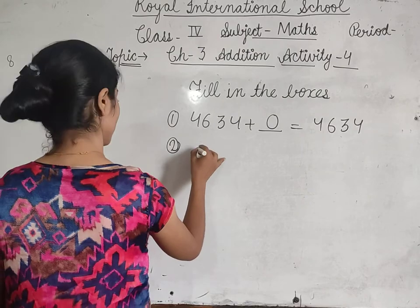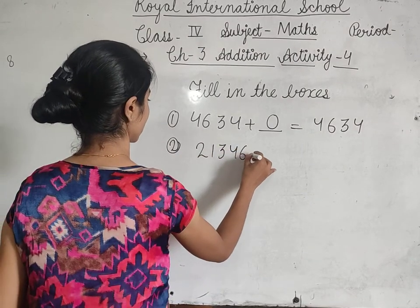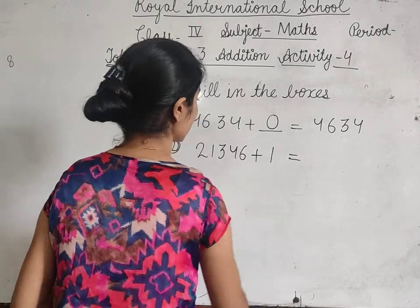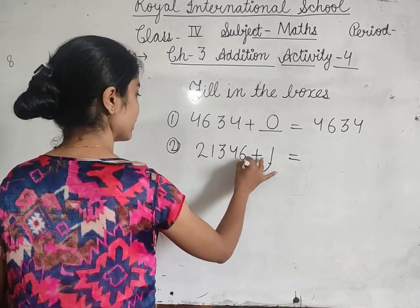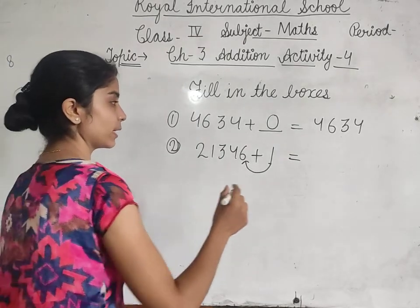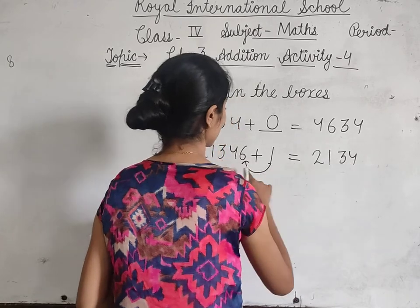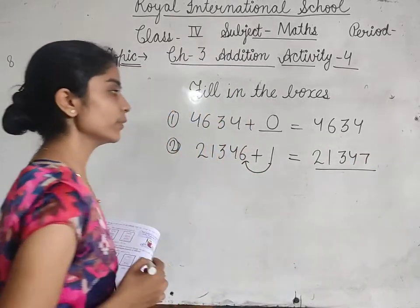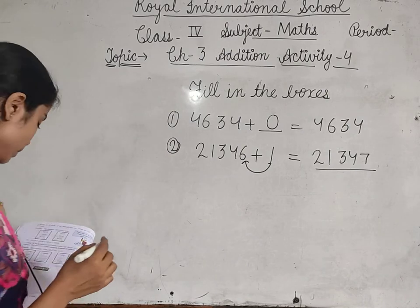Second: 21,346 plus 1. Plus 1 करेंगे, तो ones place value में add कर दो। बाकी के digits same आएंगे — 2134, 6 plus 1 equals 7. So the answer is 21,347.